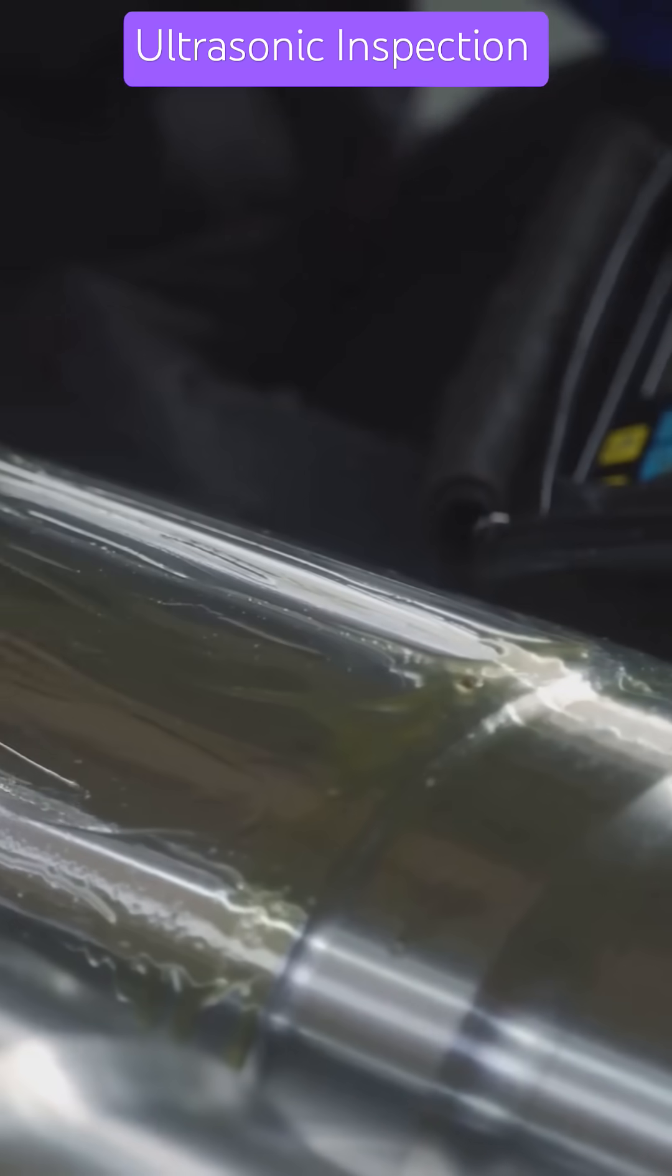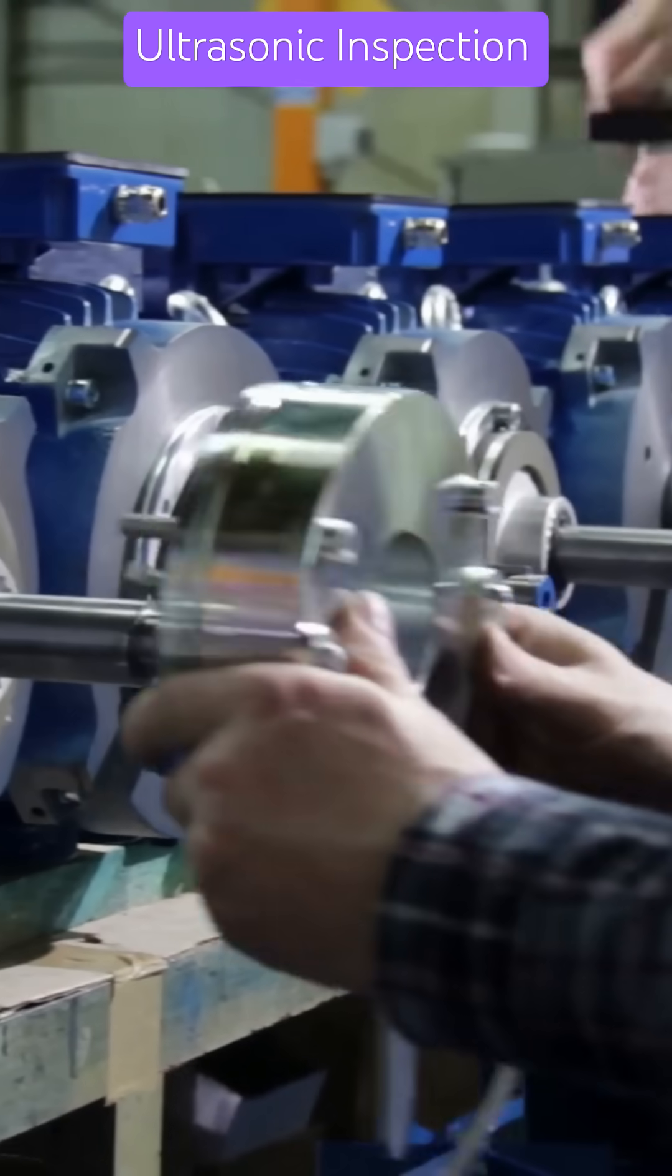How do we find defects deep inside metal without cutting anything open? Ultrasonic inspection is an option of course.